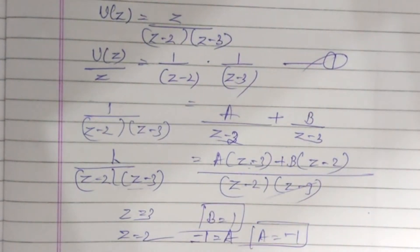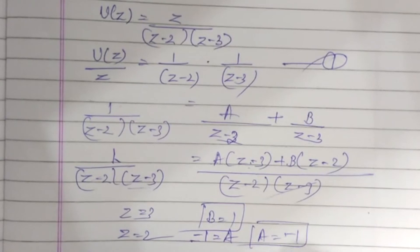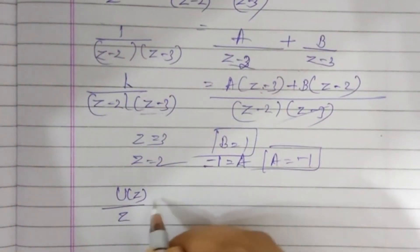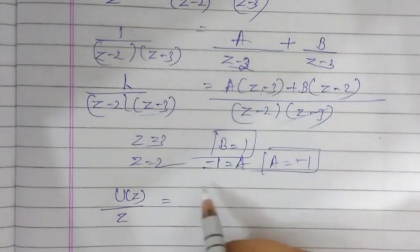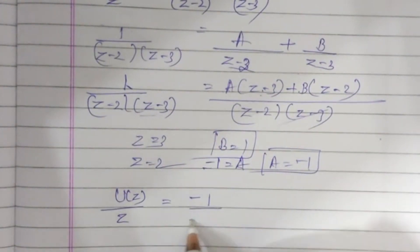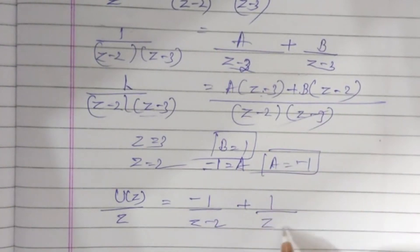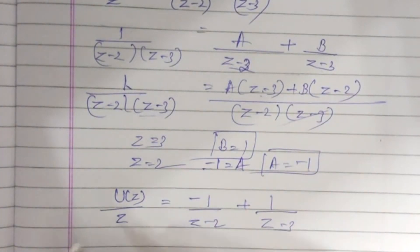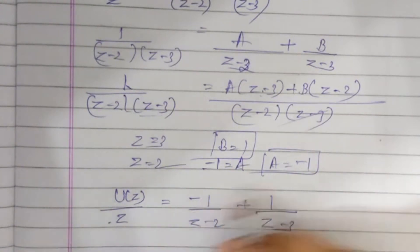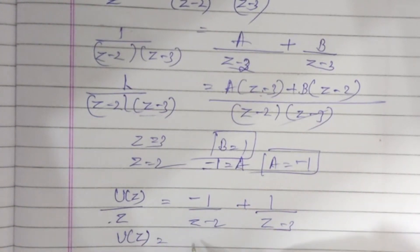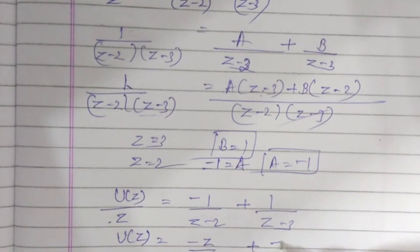Now substituting the values of A and B back, U(Z) divided by Z equals minus 1 divided by (Z minus 2) plus 1 divided by (Z minus 3). Multiplying both sides by Z gives U(Z) equals minus Z divided by (Z minus 2) plus Z divided by (Z minus 3).